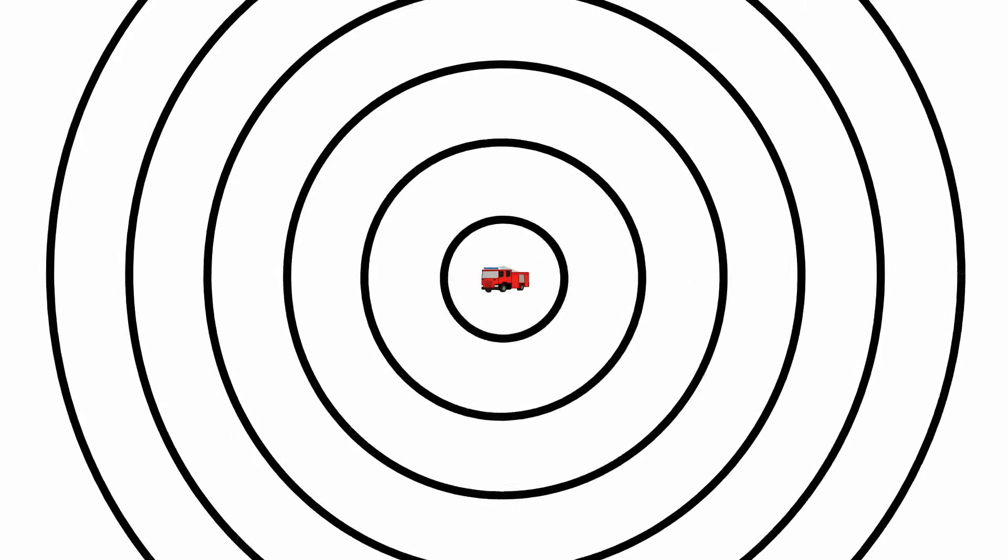The Doppler Effect is perhaps best explained visually. So here's a thing that is emitting waves. It could be a firetruck emitting sound, it could be a star emitting light, it could be a duck creating ripples on a pond. Those are all waves.